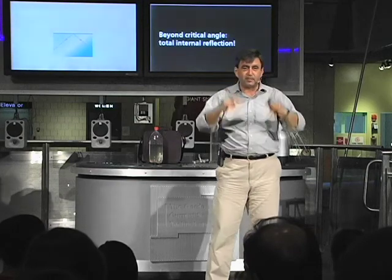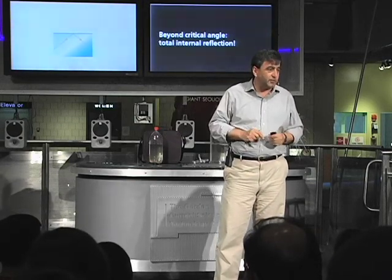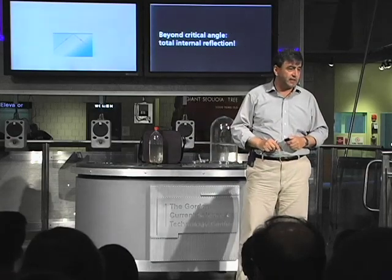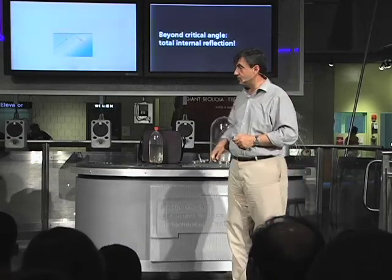So what happens if I make the angle larger than the critical angle? All of the light will be reflected — it will be like an absolutely perfect mirror. If you look in the mirror in the morning, that is a pretty good mirror — it's a silver surface. But the reflection is not perfect; about 1% or a fraction of a percent of the light gets lost at the interface. This mirror, however, is absolutely perfect. It reflects 100% of the light, to infinite accuracy. It's a phenomenon called total internal reflection.